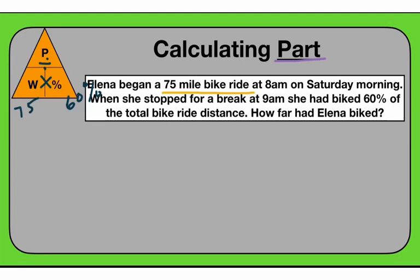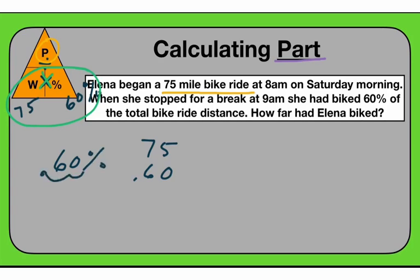How far has she biked so far? We're solving for the part. In order to solve for the part, we look at what we have — we have 75 times 60%. What that will look like is 75 times 0.60. We've got to remember to turn a percent into a decimal — you move the decimal point back two places, turning it into 60 hundredths. It would also be acceptable to do 75 times 0.6, or six tenths, because that is the same as 60 hundredths.